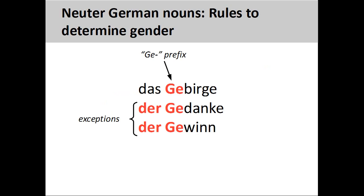Many collective nouns with a 'ge-' prefix, such as 'Gebirge' (group of mountains or mountain range), are neuter. A collective noun is a collection of things taken as a whole. There are, however, many other nouns such as 'Gedanke' (thought) and 'Gewinn' (profit) that are not neuter.